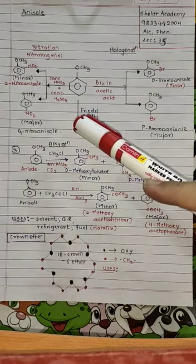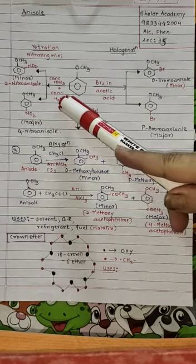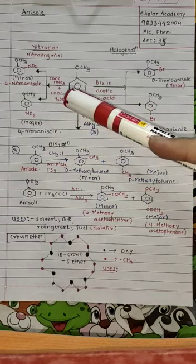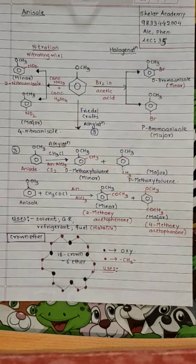So what do I get? I get a mixture again of this: 2-nitro anisole and 4-nitro anisole. Again, 2 is minor, 4 is major over here.